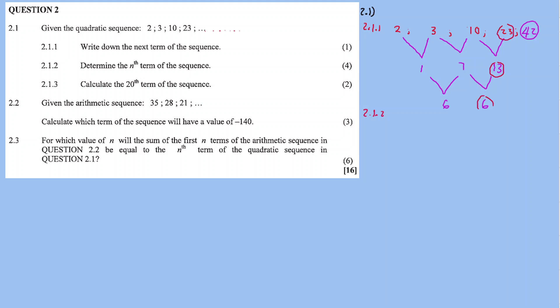For 2.1.2, we find the nth term of the quadratic sequence. The general formula is Tn = an² + bn + c. Using the first branch of the formula, 2a equals the second common difference of 6, so 2a = 6.